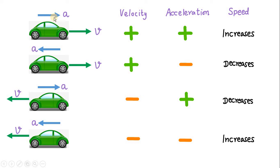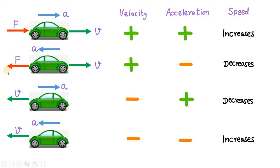How do we conclude whether the speed will increase or decrease in all these cases? Acceleration is caused by the force acting on the car or particle. When we say in the first figure that the acceleration of the car is in the rightward direction, it actually means a force must be acting on it in the rightward direction. In the second figure, when acceleration is acting in the leftward direction, that means a force must be acting in the leftward direction. This is according to Newton's second law, which says the direction of acceleration must be in the direction of the net force. Similarly, in the third figure acceleration is rightwards, so a force must be acting in the rightward direction. And lastly, the force must be in the leftward direction to create acceleration in the left direction.